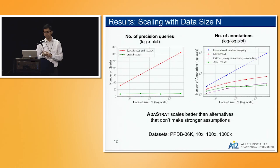This is another set of results with how the algorithms scale as we increase the number of data points. I'll focus on the right one, which is the number of annotations in a log log plot. The blue line is conventional sampling, which scales as square root of n, so that's a straight line in this plot. The green is AdaStrat at the bottom. It's as good as the strong monotonicity algorithm from last year, but makes much fewer assumptions and works much better.